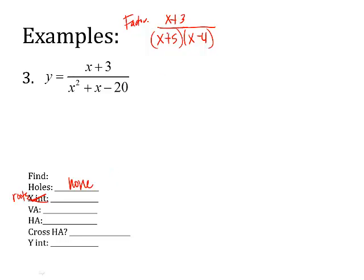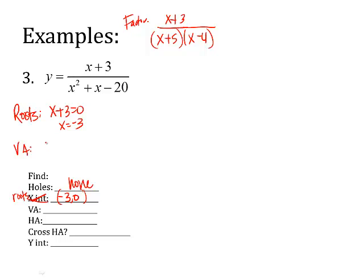For roots, take the numerator and set it equal to zero, so x = −3. For vertical asymptotes, set the bottom factors equal to zero: x + 5 = 0 gives x = −5, and x − 4 = 0 gives x = 4. So there are two vertical asymptotes at x = −5 and x = 4.